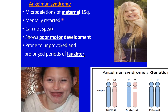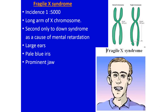If the female gamete has a deletion problem with the long arm of chromosome 15, the result is Angelman syndrome. These babies are mentally retarded, cannot speak, show poor motor development, and are prone to unprovoked, prolonged periods of laughter — which is why they are labeled as Angelman. Fragile X syndrome has an incidence of 1 in 5000; it involves the long arm of the X chromosome and is second only to Down syndrome as a cause of mental retardation. These individuals show large ears, pale blue iris, and a prominent jaw.